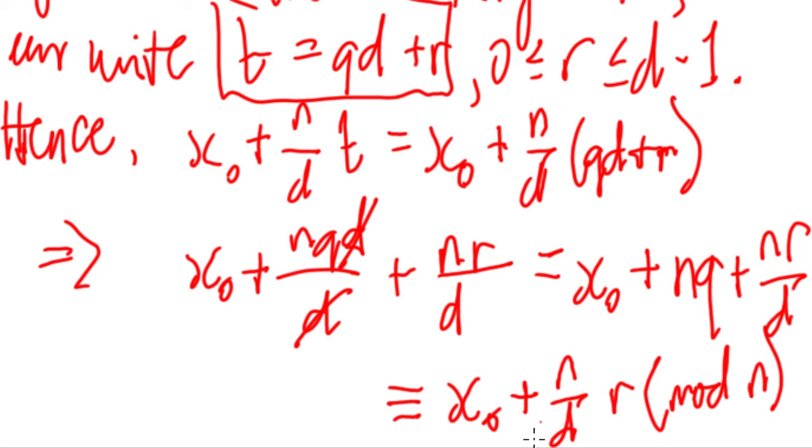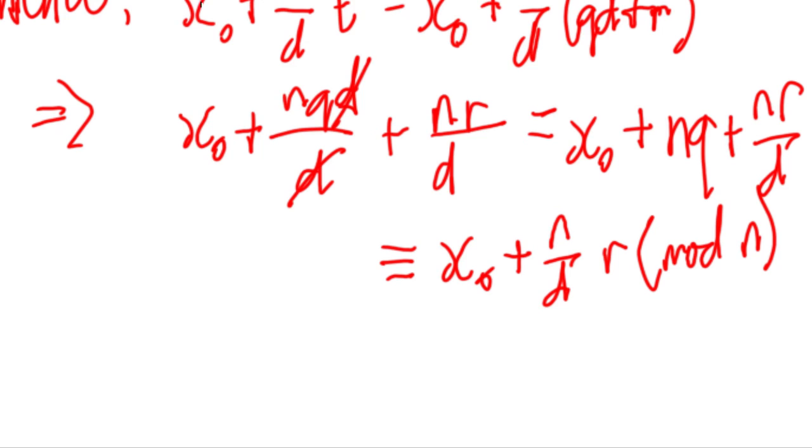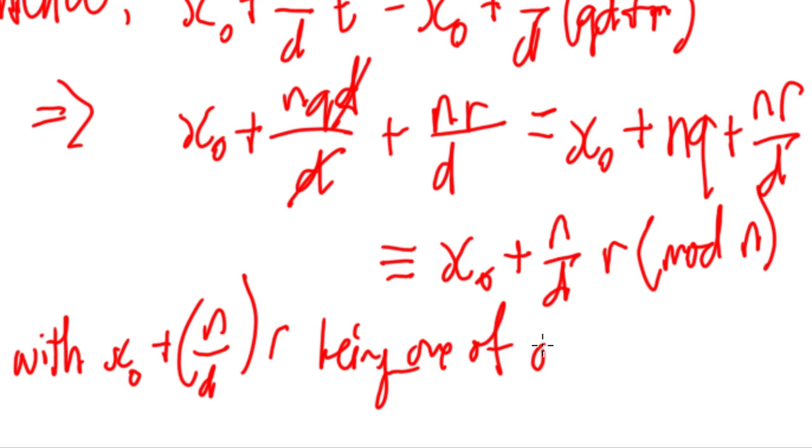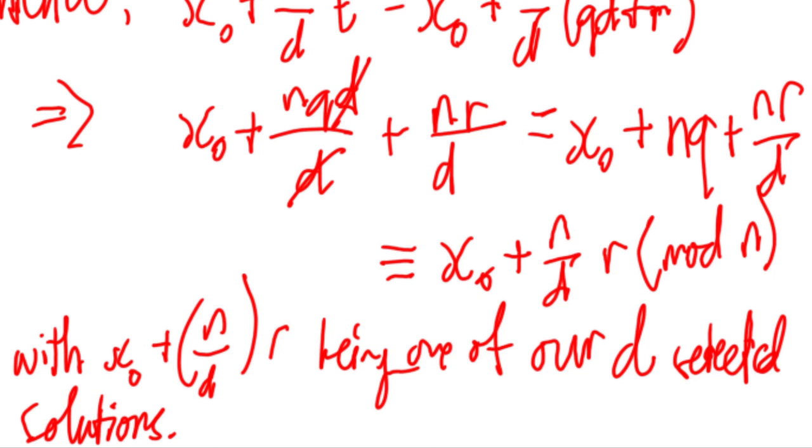So we continue here now. With x sub 0 plus n over d times r being one of our d selected solutions. And that's it, that's the end of the proof. That's the very last part of the proof.